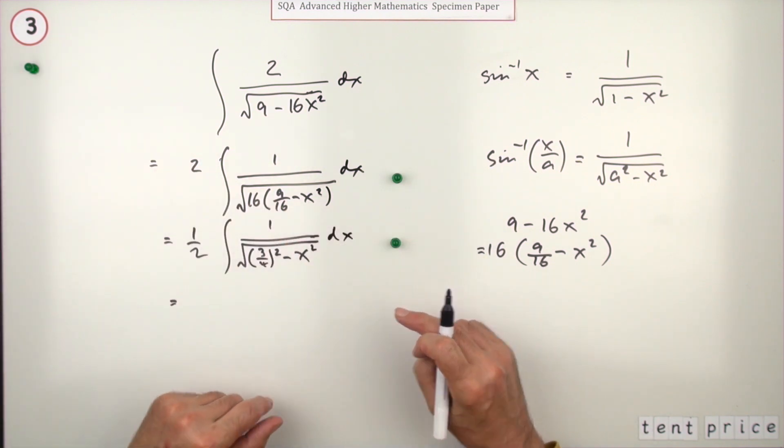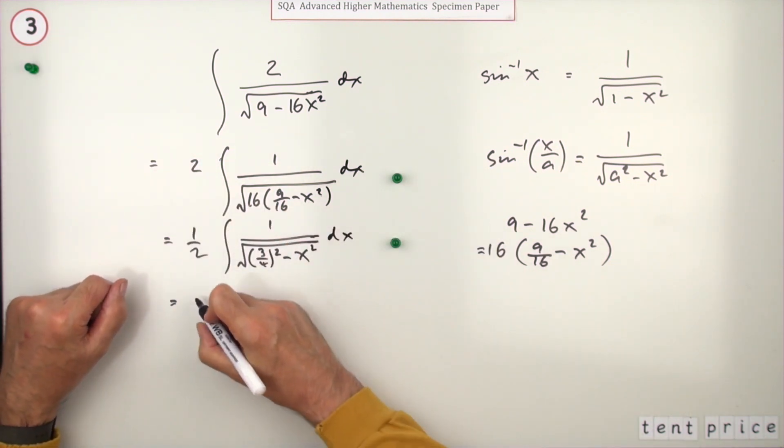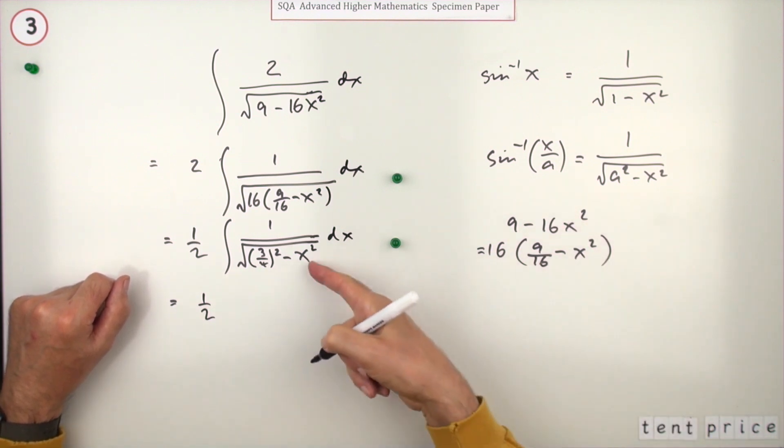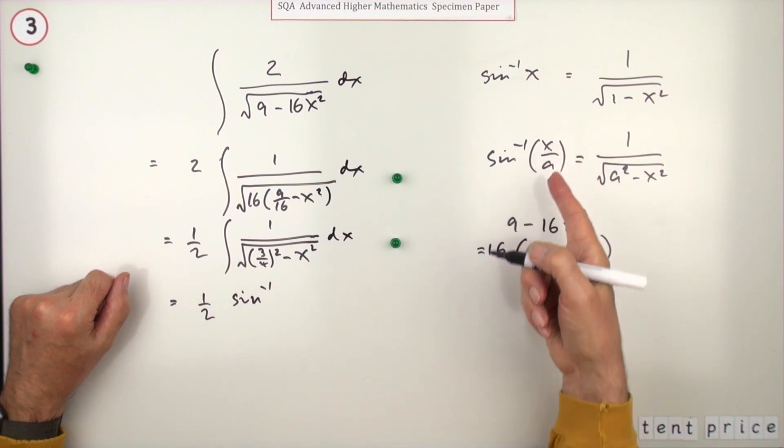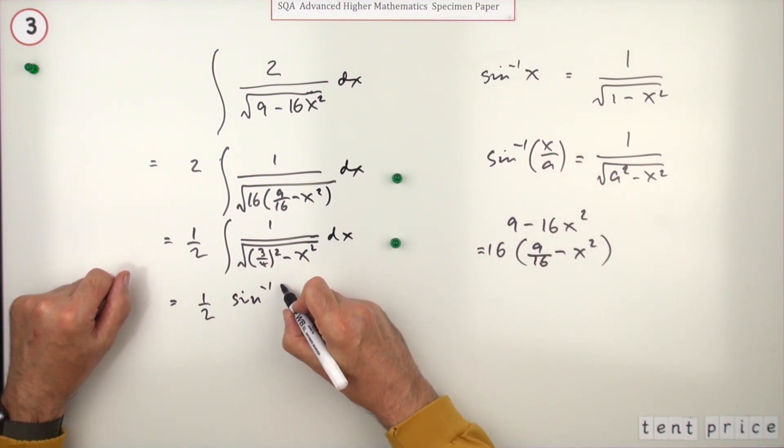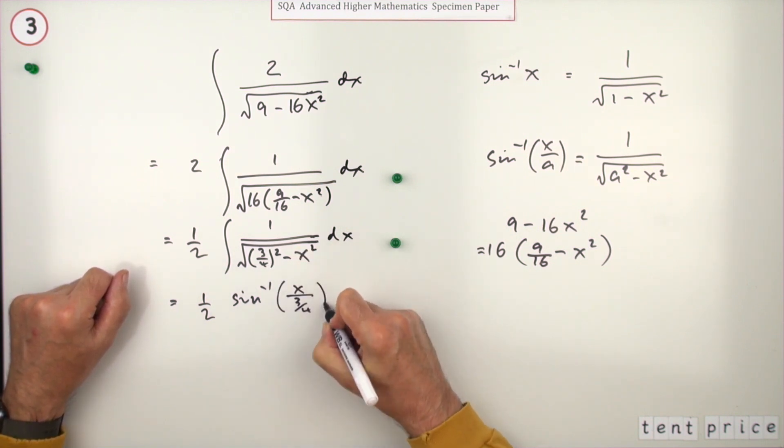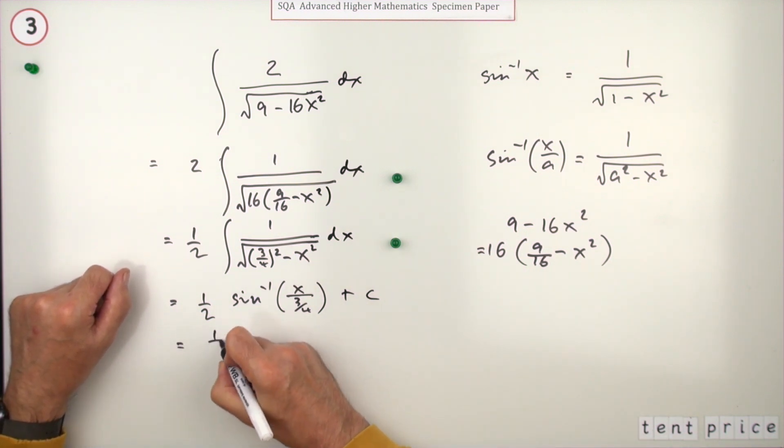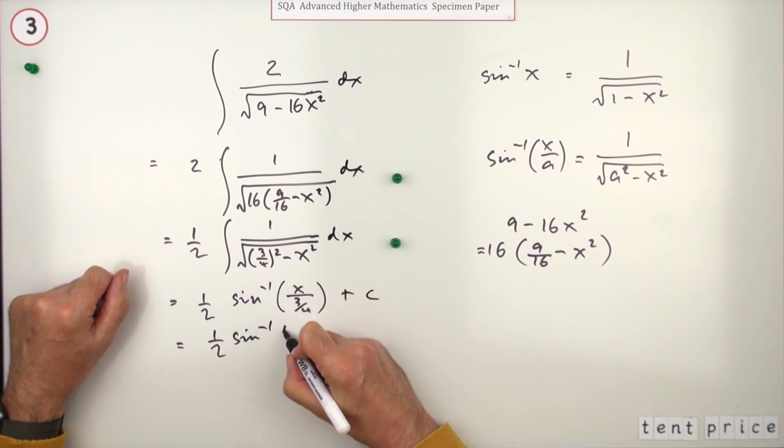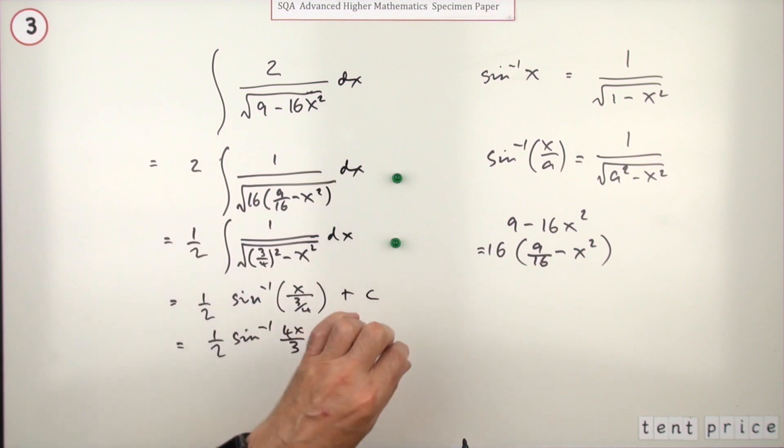The final mark is just for putting it back. You've got a half of - according to this, if you've got this you've got inverse sine of x upon 3/4 plus c. Which means I have to write it all over again: half of inverse sine of - that will be 4x upon 3 plus c for the final mark.